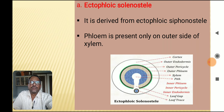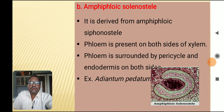The first type is ectofloic solenostele, derived from ectofloic siphonostele, with phloem present only on the outer side of xylem. The second type is amphifloic solenostele, derived from amphifloic siphonostele, with phloem present on both sides of xylem, surrounded by pericycle and endodermis on both sides. It is present in Adiantum pedatum.